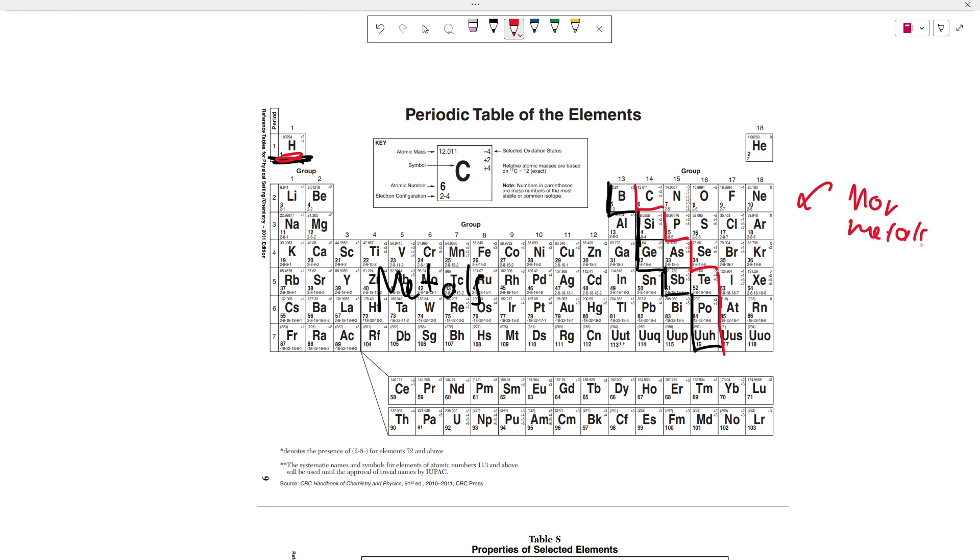So non-metals are kind of the opposite of metals. They're going to have a low density versus metals having a high density. They're going to have a low boiling point, a low melting point. They're going to be poor conductors of electricity and they're going to be very brittle.